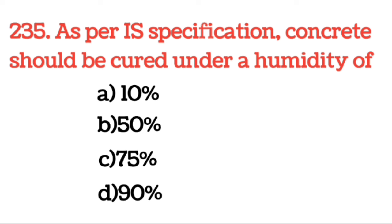Next question: As per IS specification, concrete should be cured under a humidity of 90 percent. IS specification के आधार पर जो है concrete का curing 90 percent humidity पर होना चाहिए; अगर humidity इससे कम है तब हमको concrete का curing करना चाहिए।